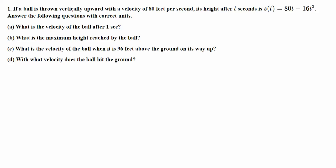If a ball is thrown vertically upward with a velocity of 80 feet per second, its height is given by this function — this is the height or position function. We have to answer the following questions. In part A, we have to find the velocity, that's the rate of change of this height. Rate of change means we need to find the derivative. The velocity v(t) is the derivative of the height function.